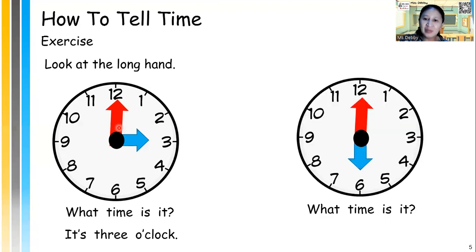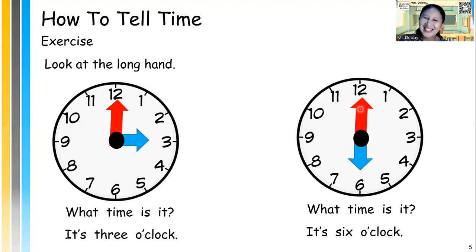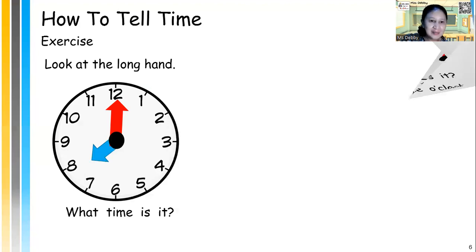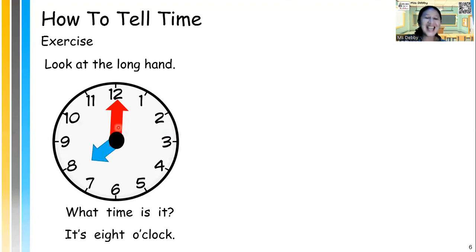Now you do the next one by yourself. What time is it? Look at the short hand, and the long hand is at number 12 — so it's 6 o'clock. Did you get that? The next one, what time is it? The short hand and the long hand is at 12, so it's exactly 8 o'clock. Good job.